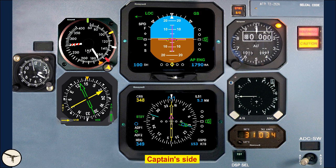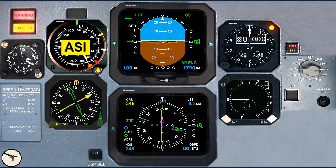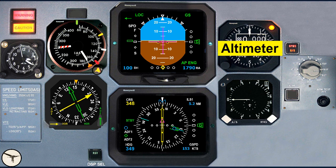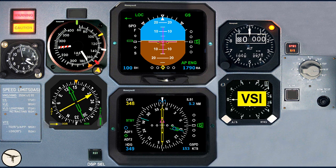Ahead of each pilot — the captain and the first officer — there is a panel with six instruments: the airspeed indicator (ASI), the electronic attitude direct indicator (E-ADI), the altimeter, the radiomagnetic indicator (RMI), the electronic horizontal situation indicator (E-HSI), and the vertical speed indicator (VSI).